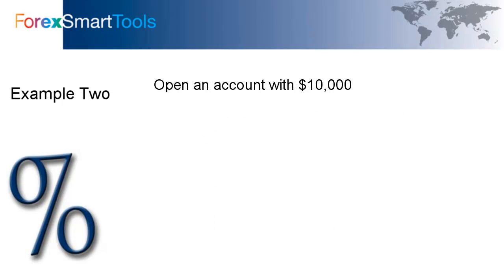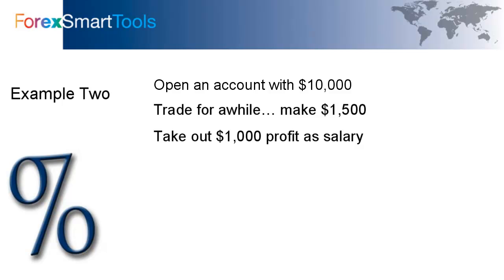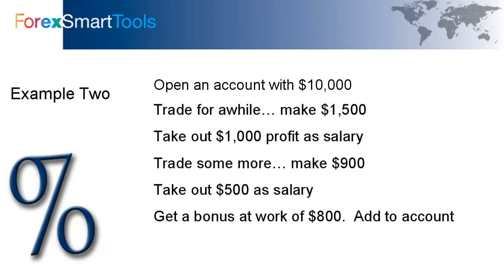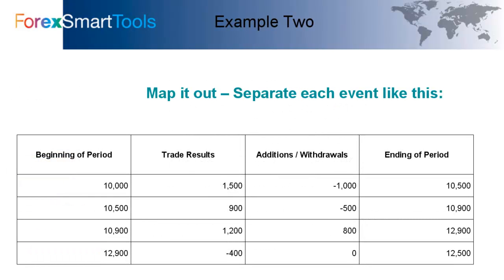Now let's take another example. Let's say we open an account with $10,000. We trade for a while and make $1,500. We take out $1,000 profit as salary. Then we trade some more and make $900, and take out $500 as salary. We get a bonus at work — $800 that we add to our account. Then we trade some more and lose $400. We can map out each event separately, looking at beginning period, trade results, any money added or withdrawn, and ending value. We see we have 4 separate periods of time.